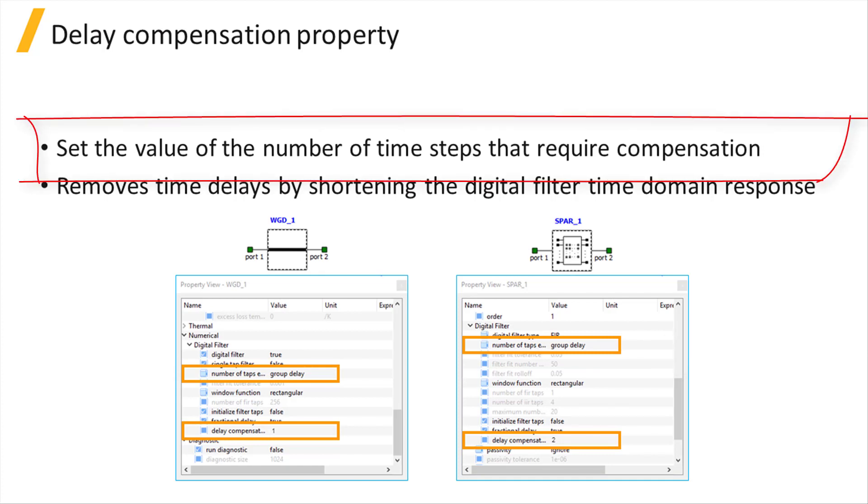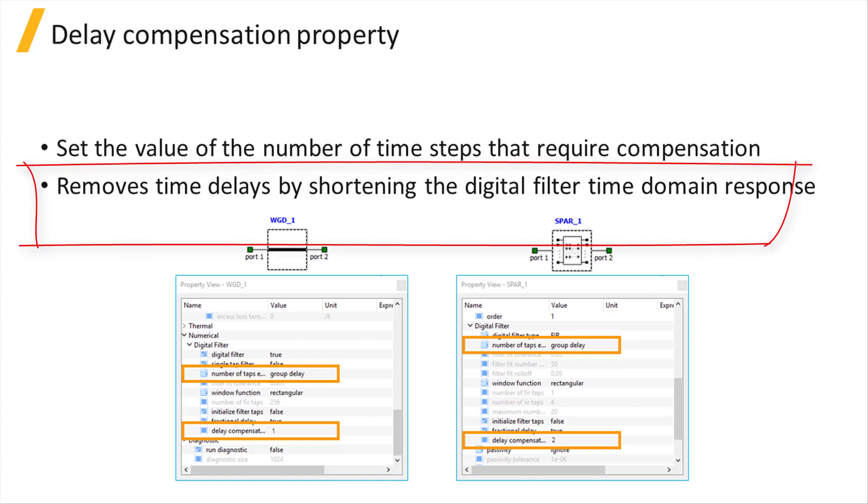Set the property value to the integer number of time steps that require delay compensation. The time delays are removed by shortening the Digital Filter Time Domain response.